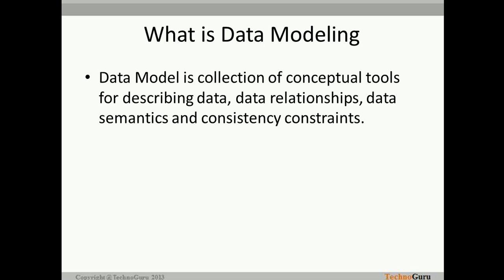If you combine the data and its relationships, how the semantics will work — meaning how the overall look of your data model will be and what you are going to achieve — and of course the consistency constraints. For example, if you have a primary-foreign key relationship, how you define those constraints. When you design any data model, do not use more technical terms like primary key or foreign key, which will not be understood by the business folks, who are the more important people while designing the data model. Stick to business terms.